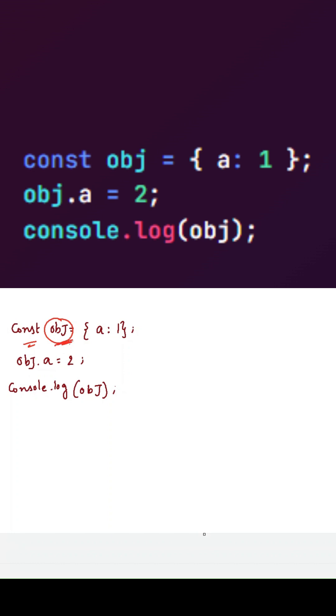But here this object is a reference type. So in reference types, we cannot reassign the data. When we are declaring the variable by the const declaration, we cannot reassign the data, but we can still modify the properties of the object.